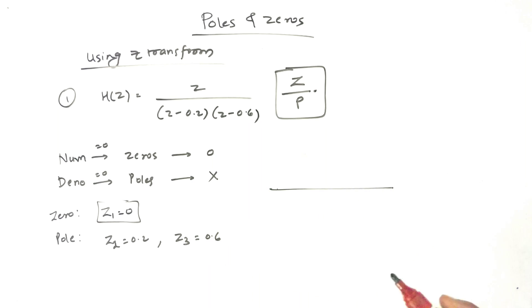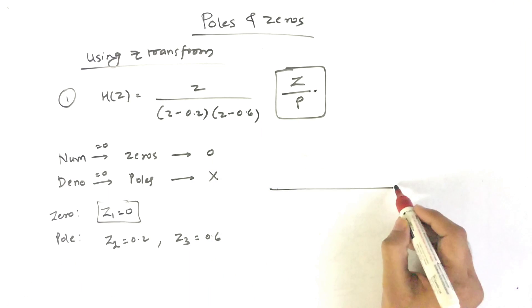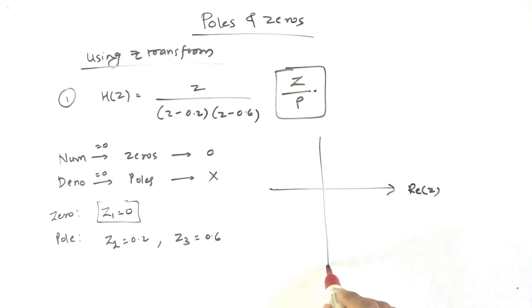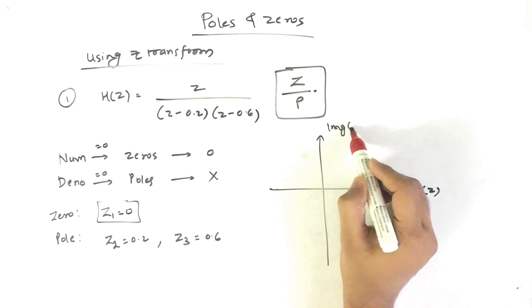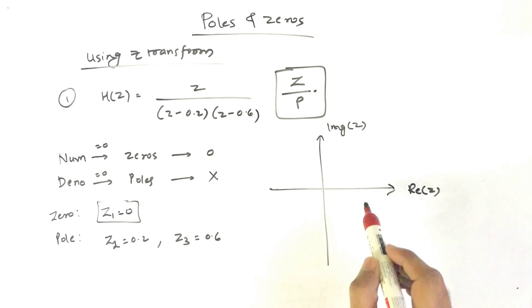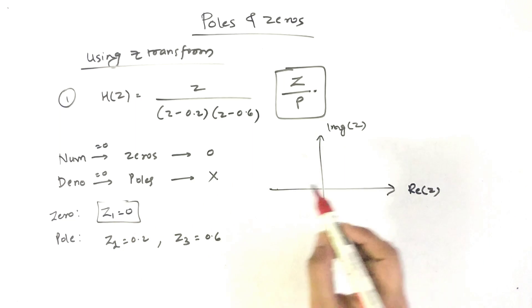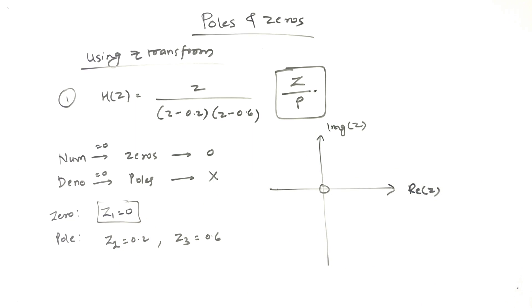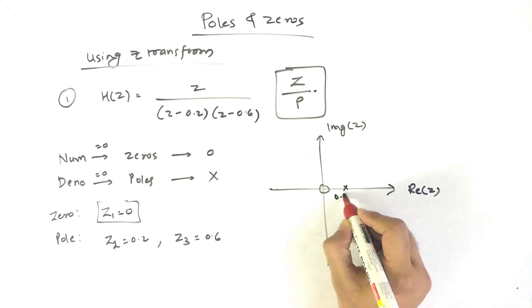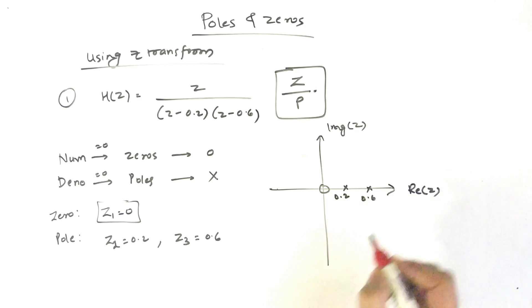So how can we plot our Poles and Zeros? On the X-axis we plot the real values of Z, and on the Y-axis we plot the imaginary values of Z. Our example has all real terms. The zero is at 0, and the poles are at 0.2 and 0.6. This is the basic meaning of Poles and Zeros using Z transform.